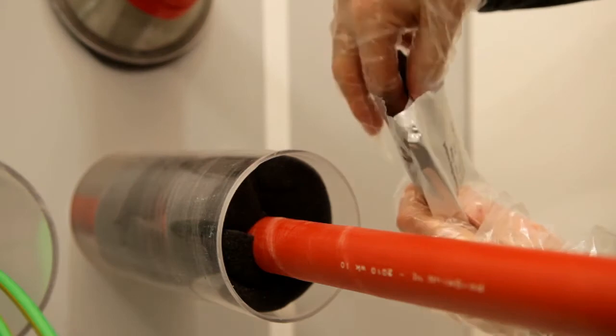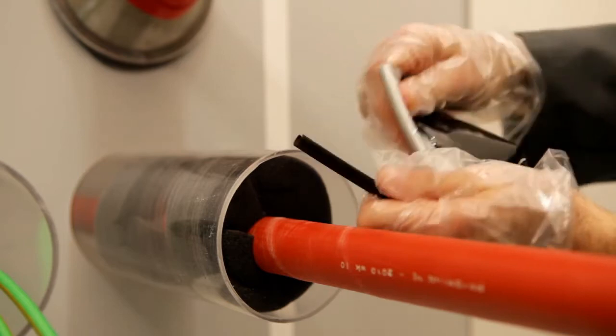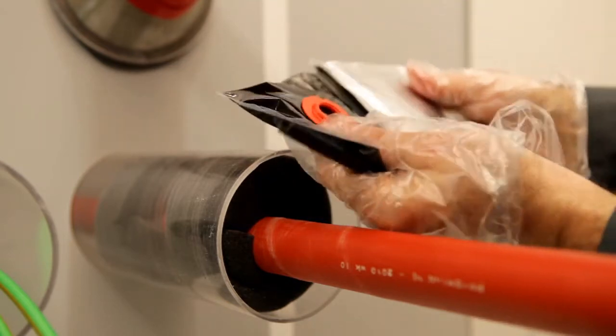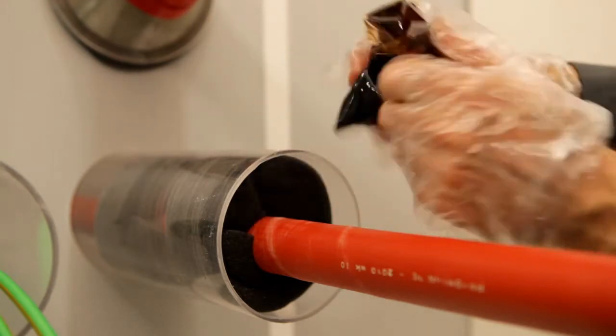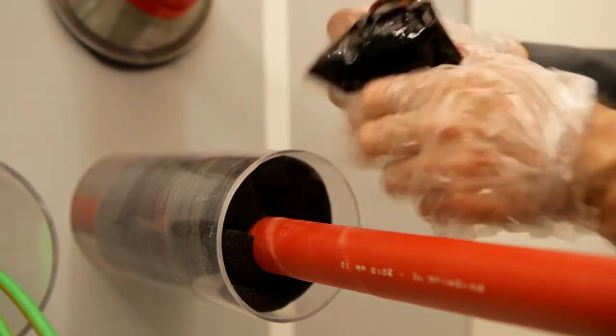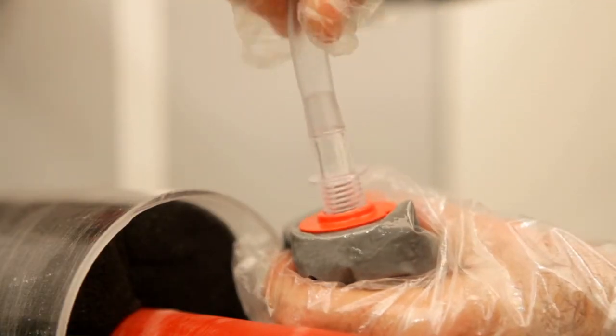Remove the resin package from its protective aluminium pouch and mix the polyurethane filler for 30 seconds. Then, open the package using the screw nozzle.